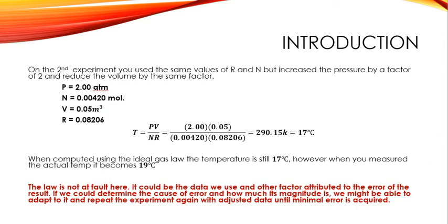Now, on the second experiment, you used the same values of R and N, but increased the pressure by a factor of 2, and reduced the volume by the same factor. Of course, the solution, if you used the ideal gas law, should be the same. It is still 17 degree Celsius.